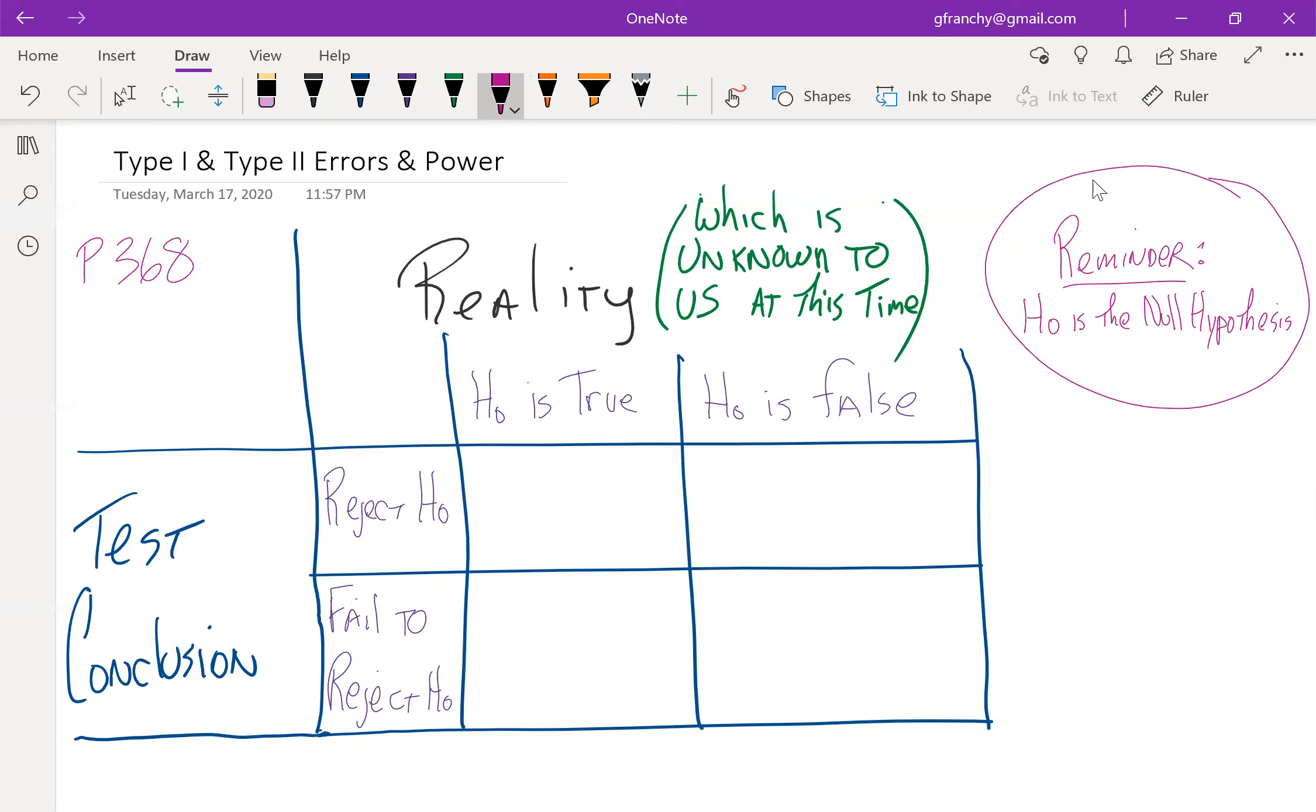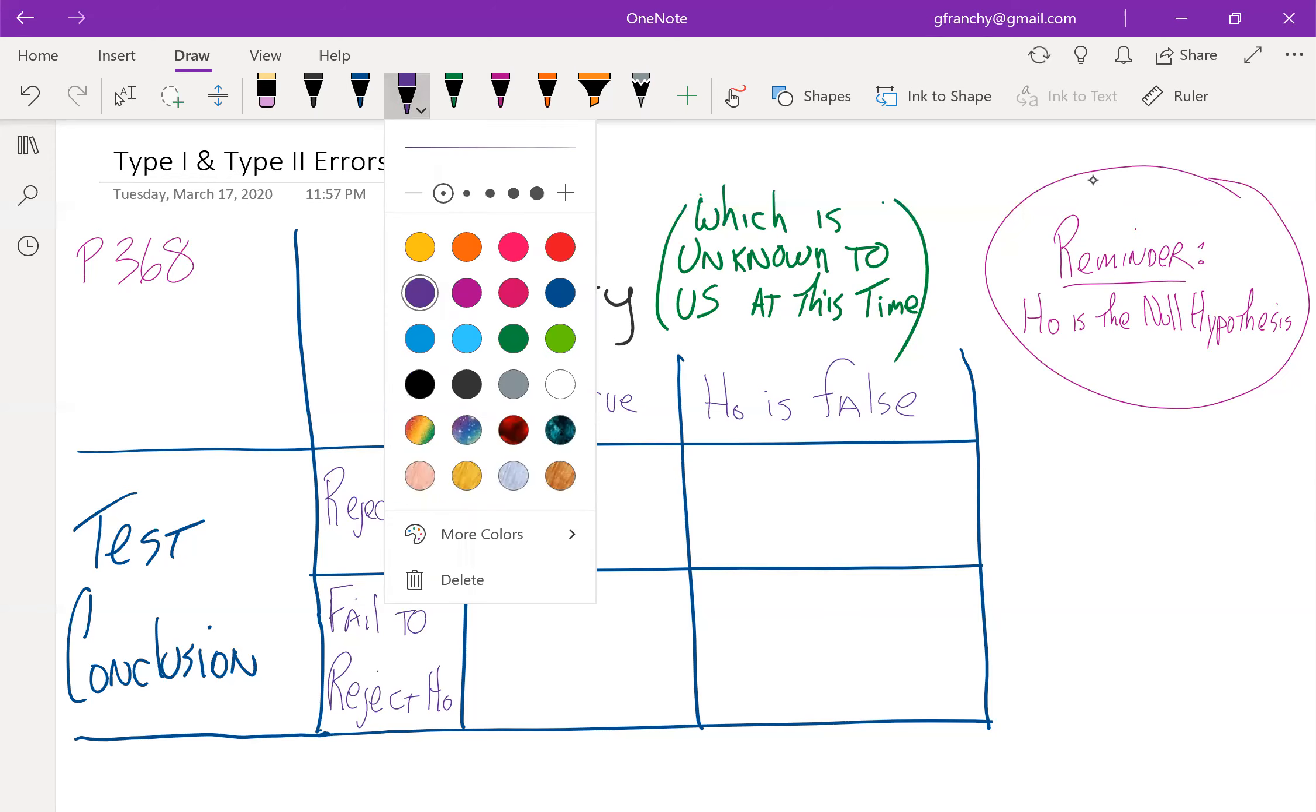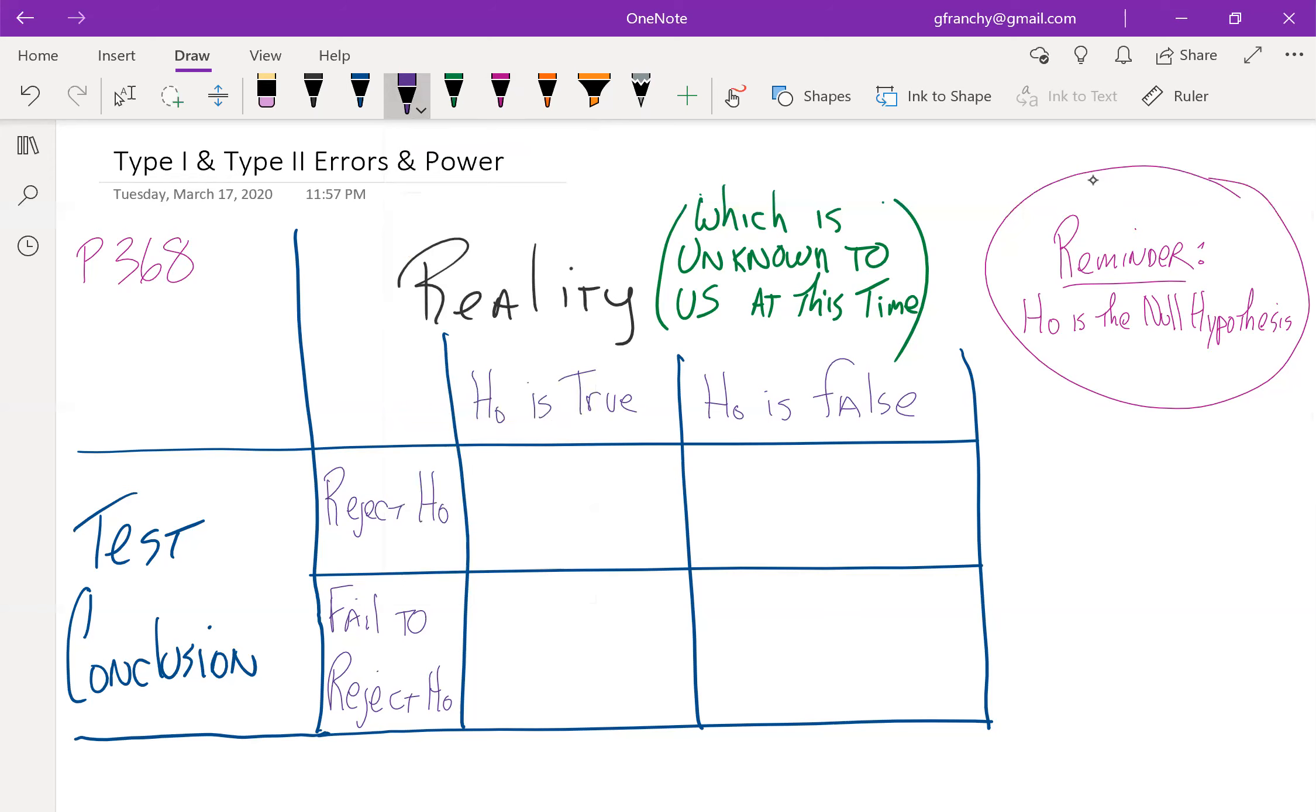And when we run through our hypothesis test, we're either going to reject the null hypothesis or we're not going to reject the null hypothesis. And there's a couple of cases here. There's four possibilities then as we look at combining these.